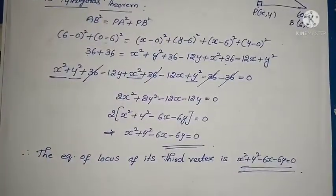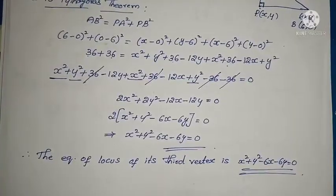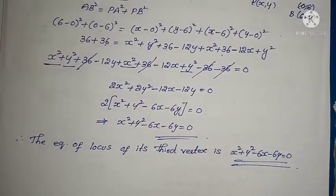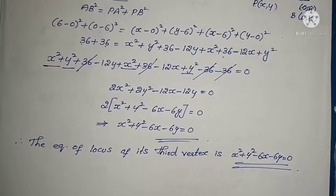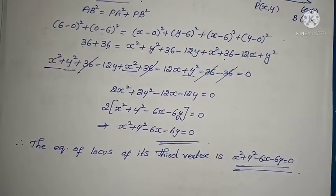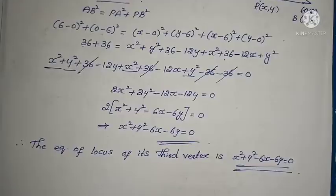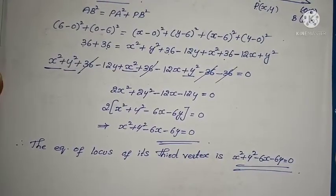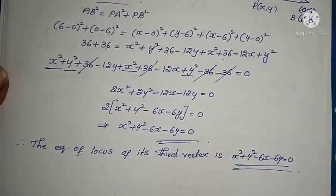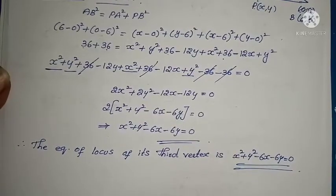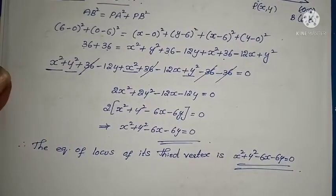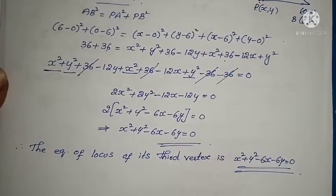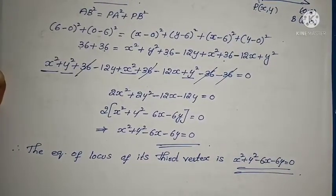The equation of the locus is very simple — just apply the distance formula and (a + b)² and (a - b)² formulas. These problems are easy. If you have any doubts, write in the comment box. For the next video continuation, please like, share, and subscribe to the channel. Thank you.